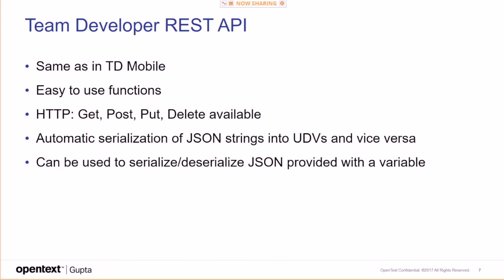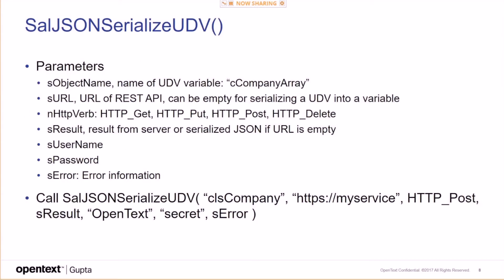It's the same as in TD Mobile — easy-to-use functions with automatic serialization of JSON strings into UDVs and vice versa. Here's the first function: star-json-serialize-udv.